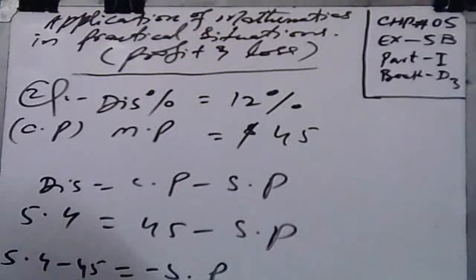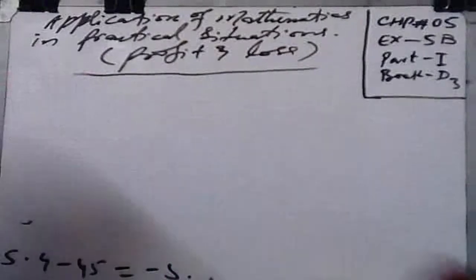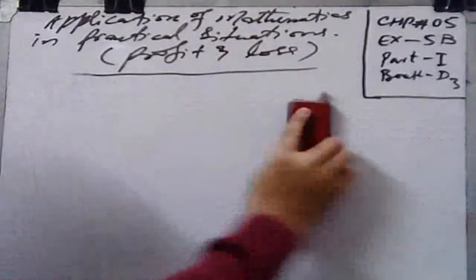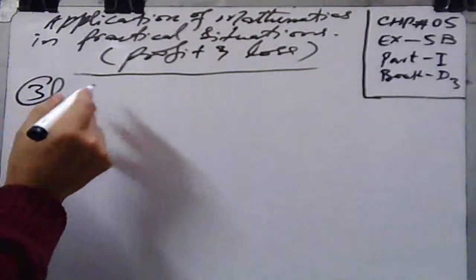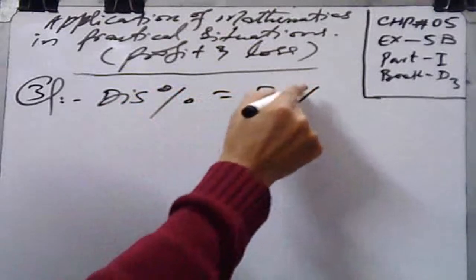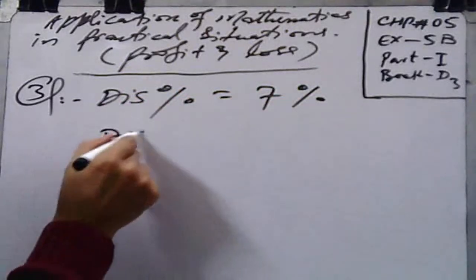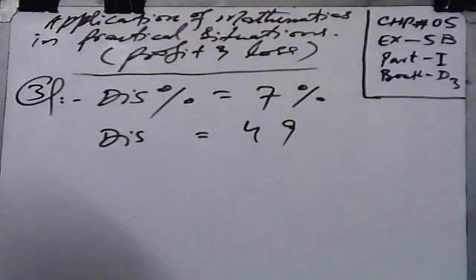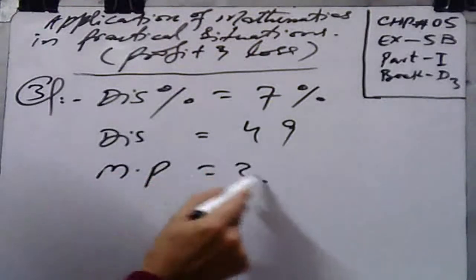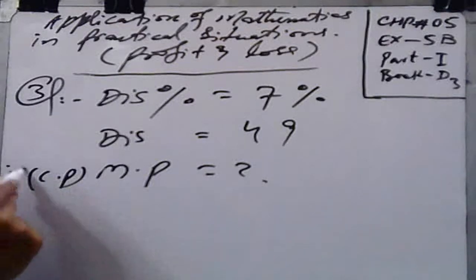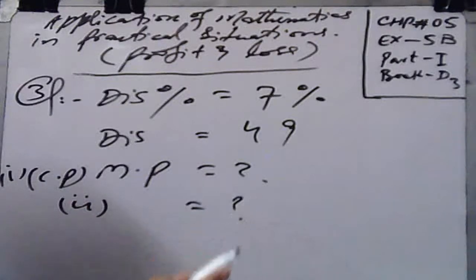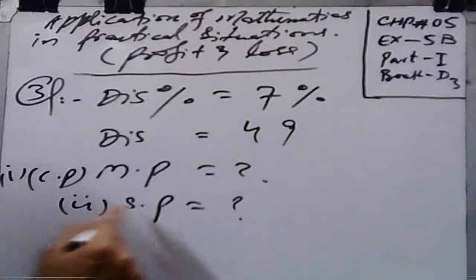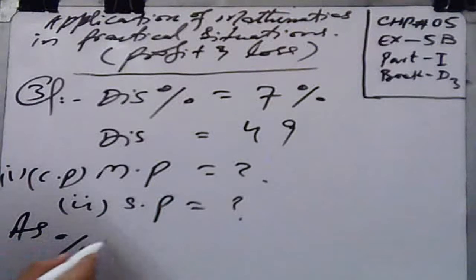Question number three: during a sale there is a 7% discount on a television set. If the discount is $49, find: (1) the market price and (2) the sale price of the television set. So market price is what we have to find first, and then the sale price.